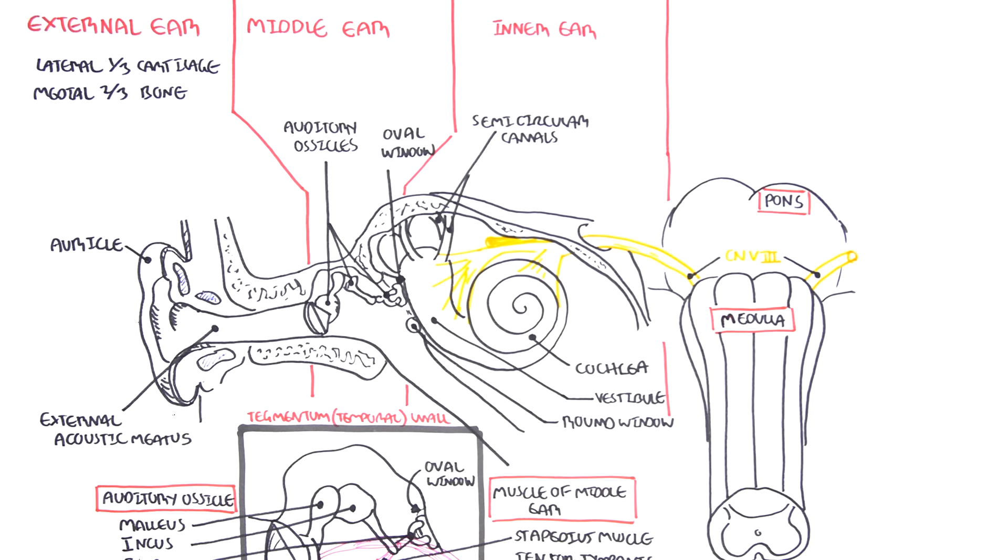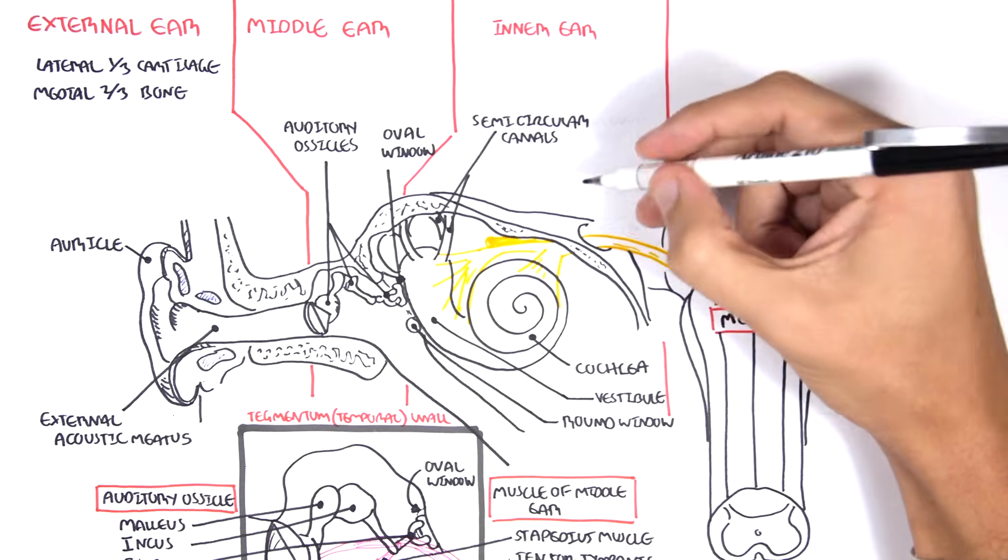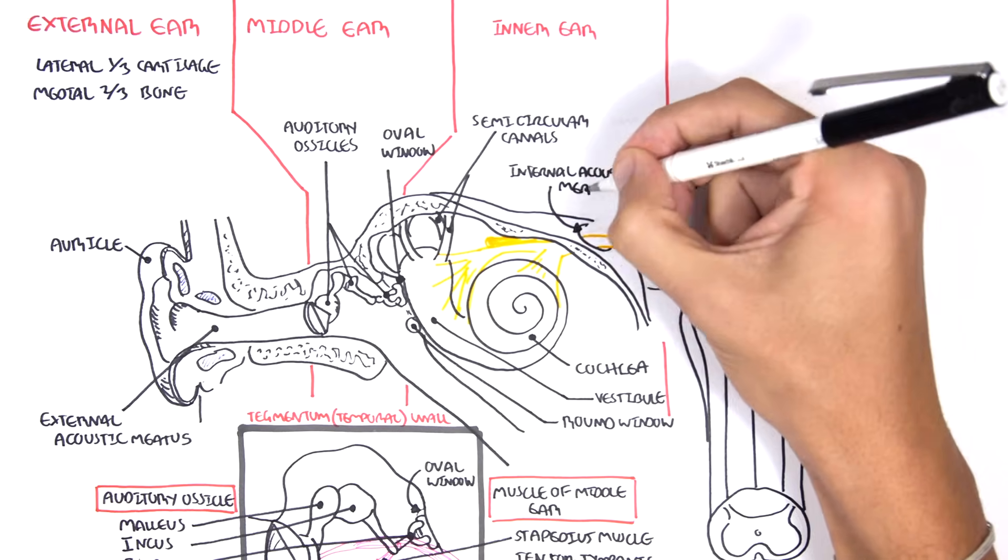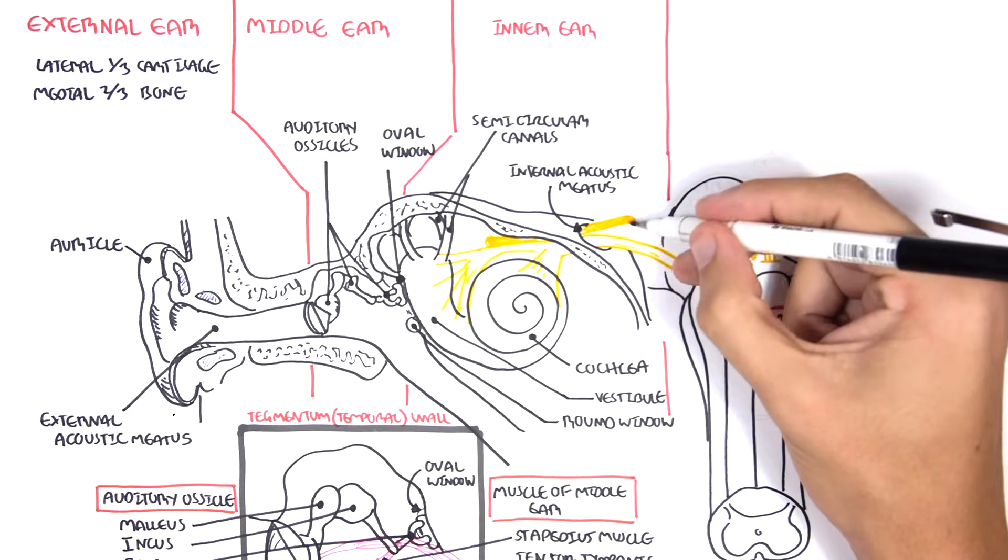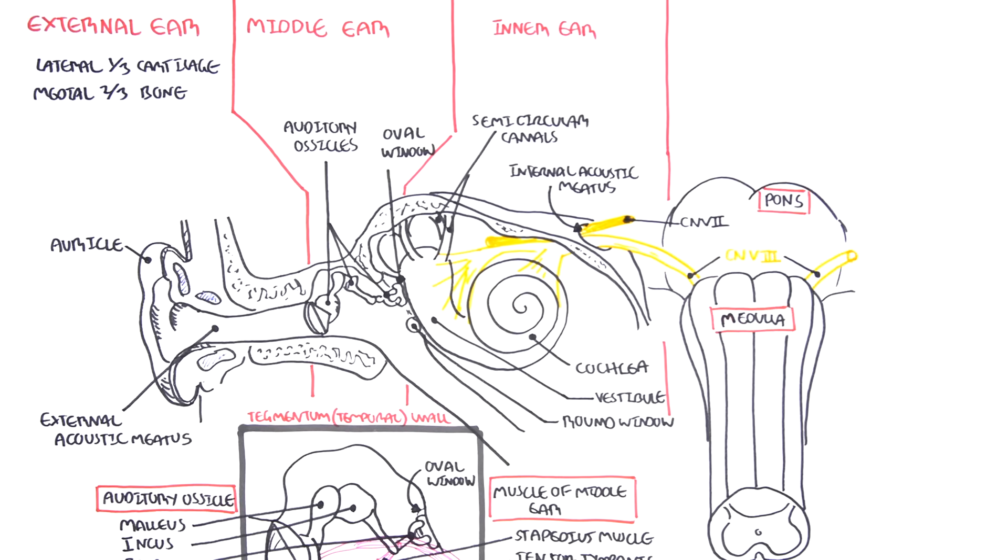So there is another cranial nerve that actually travels along together with the vestibulocochlear nerve through the internal acoustic meatus. This cranial nerve is cranial nerve number 7, also known as the facial nerve.